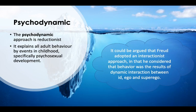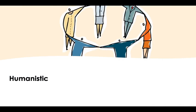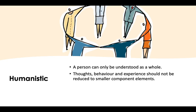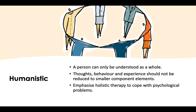So Freud takes a somewhat broader approach than others, because it's not just small, single events he's looking at — he's looking at interactions of different parts playing out across multiple events, which leads to these issues. That's why it is seen as more interactionist. The humanistic approach is probably the most holistic: a person can be understood as a whole, and thoughts, behavior, and experiences should not be reduced to small component elements — it's illogical to do so, because you need to see the whole person to understand how they can cope with psychological problems. So the spectrum runs from humanistic and social learning theory at the holistic end, through Freud, down to behaviorist and biological viewpoints as the most reductionist.